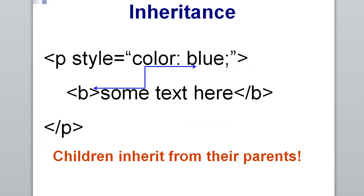We also have this concept of inheritance, and it essentially means that children inherit from their parents. If we look at the P tag as containing a B tag, the P is the outside tag and can be looked at as the parent. The B is contained inside, so it can be looked at as the child. All of the text inside the B tag would be blue because the rule is for the paragraph to be blue.